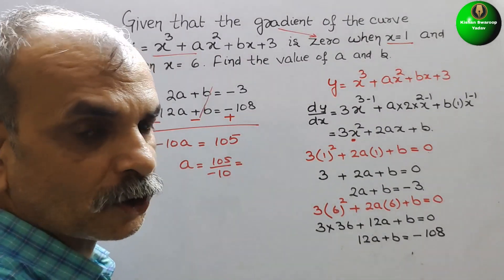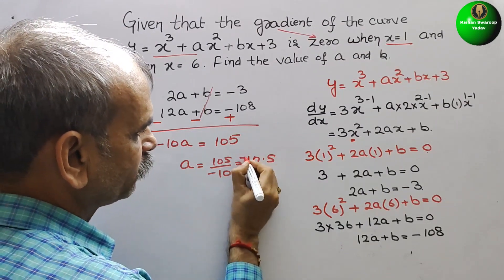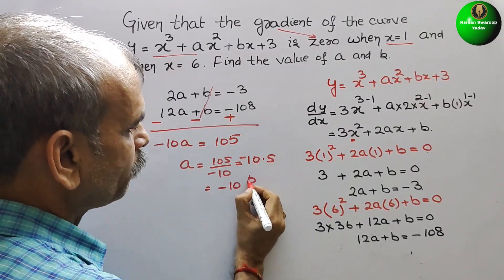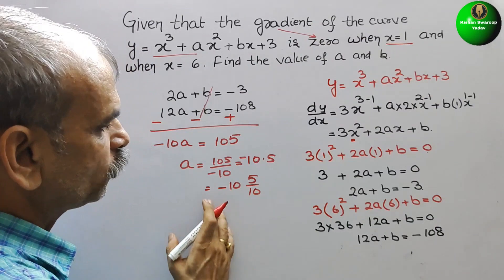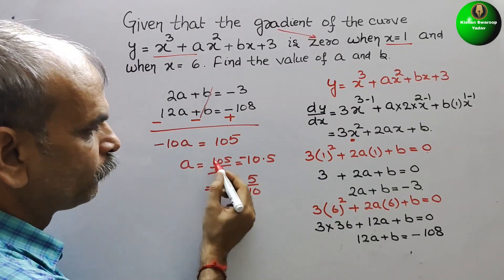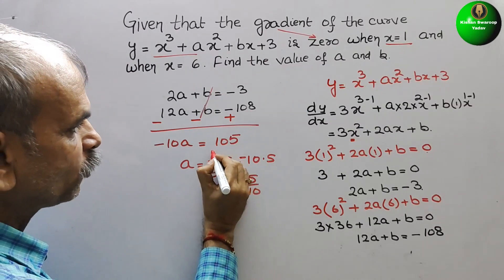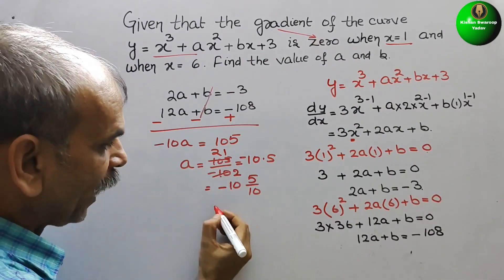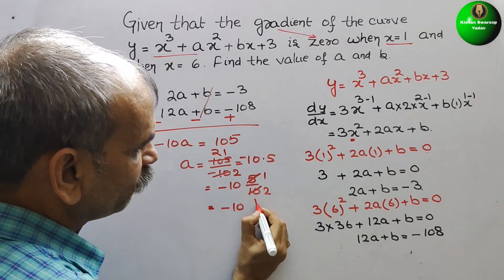So 105 minus 3 is 105, meaning 10a equals minus 105. Therefore a equals minus 105 divided by 10. Reducing: divide both by 5, giving a equals minus 21 over 2. So a equals minus 21 by 2, or minus 10 and a half.